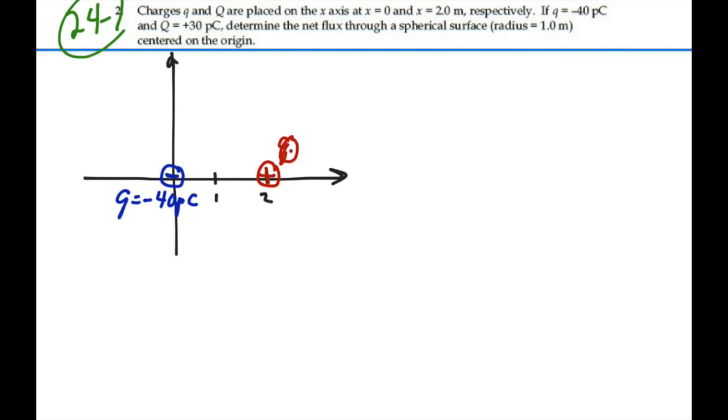That's big Q, I'm sorry. And that is equal to plus 30 picocoulombs. And then we have a sphere located of radius 1 around the origin like this. And we want to find the net flux through the sphere.